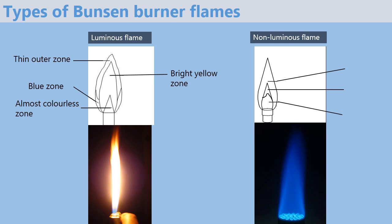The non-luminous flame has three regions. The first one is the pale blue zone, where the gases burn completely because there is plenty of supply of air. Next we have the green-blue zone, where there is insufficient supply of air and therefore the gases are partially burnt.